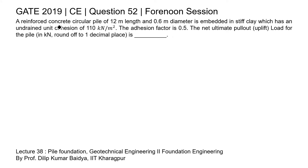In this question, a concrete pile of length 12 meter and diameter 0.6 meter is given, which is embedded in stiff clay. The soil cohesion is given as 110 kilo Newton per meter square and the adhesion factor is 0.5. We need to calculate the pullout load, that is the uplift for the pile.